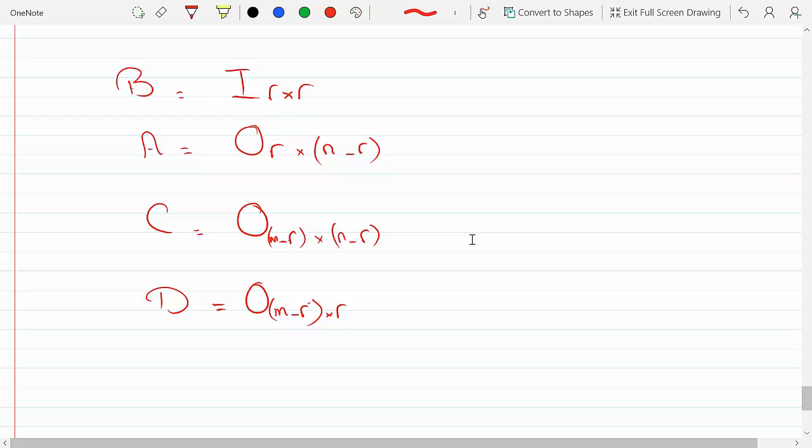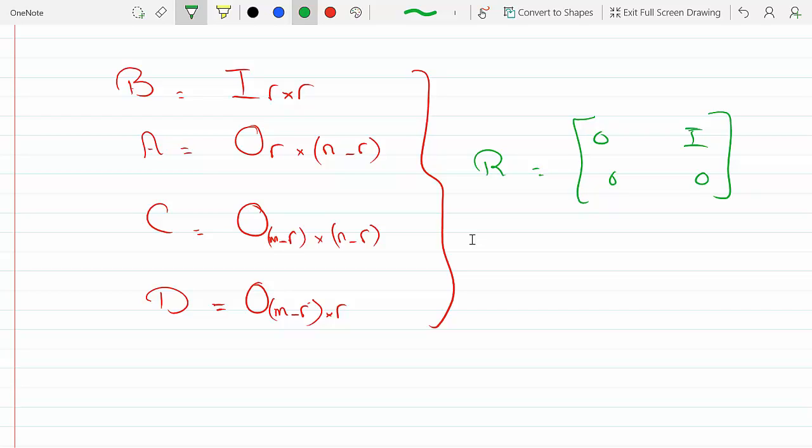So this is my matrix. In other words, if I could summarize this, my R will be zero, identity, zero, zero block. These are blocks, this is my R matrix.